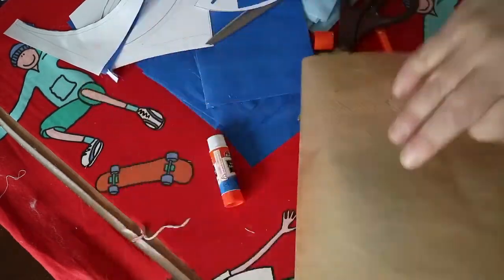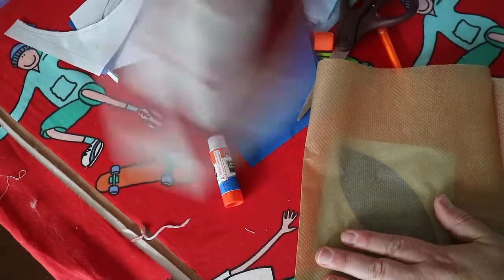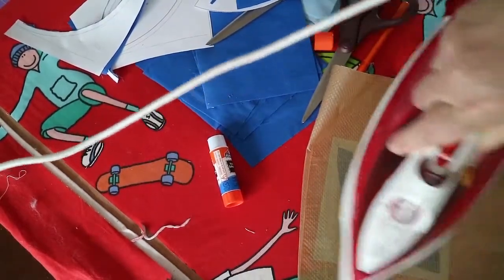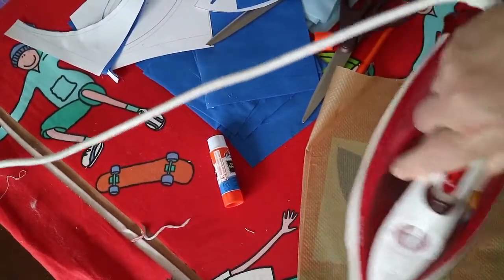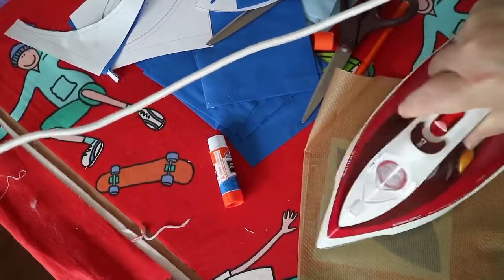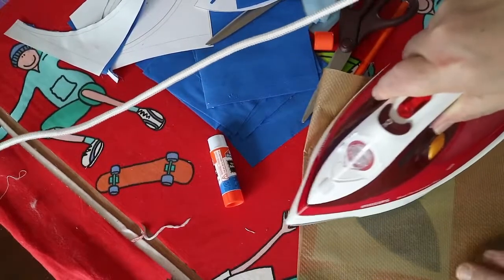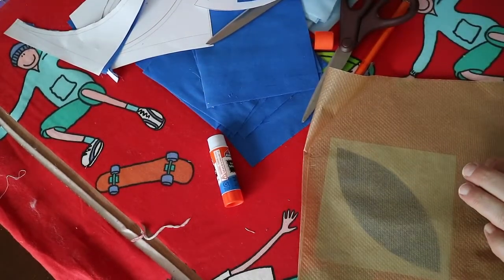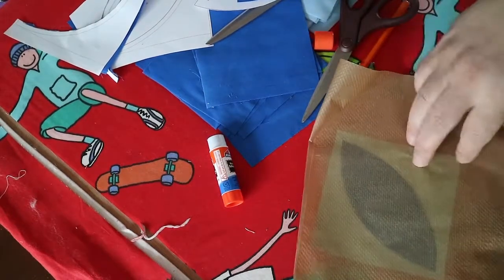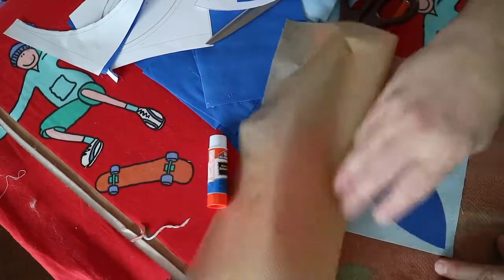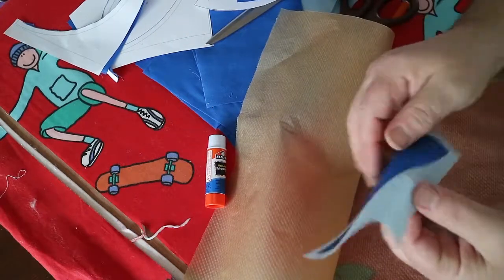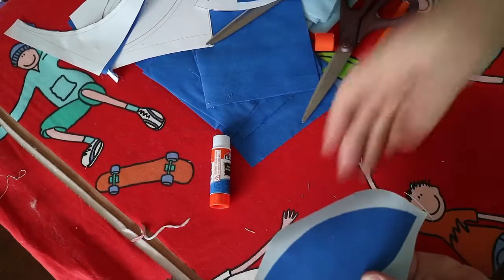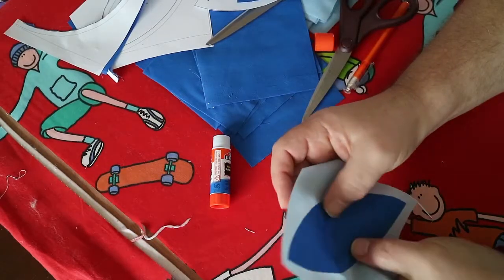Then we fold this over like this, and then we take our iron and we iron. This is a quick way of doing it, the manual way. And there we go. Our edges are down. Now we can stitch along this edge with our sewing machine or by hand and lock this down.